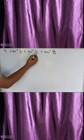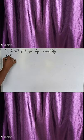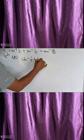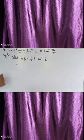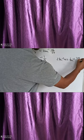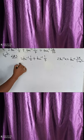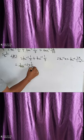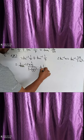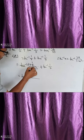The next problem: prove that 2 tan⁻¹(1/2) plus tan⁻¹(1/7) equals tan⁻¹(31/17). We take the left hand side. We must remember that 2 tan⁻¹(x) equals tan⁻¹(2x divided by 1 minus x²). Applying this: 2 tan⁻¹(1/2) equals tan⁻¹(2 into 1/2, divided by 1 minus (1/2)²), plus tan⁻¹(1/7). The numerator gives 1.